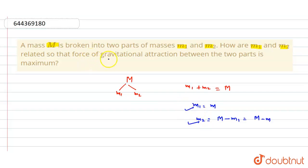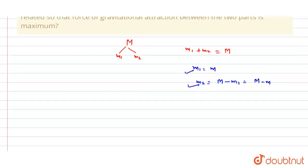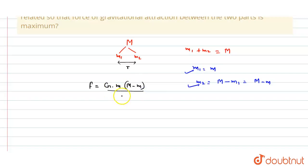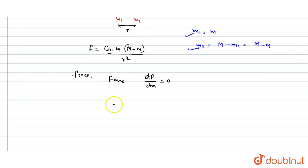According to the question, the gravitational force should be maximum. For maximum gravitational force, dF by dm equals zero. The gravitational force F is given by the formula F equals G times M1 times M2 divided by R squared, which becomes G times m times (M minus m) divided by R squared. For maximum force, dF by dm should be zero.